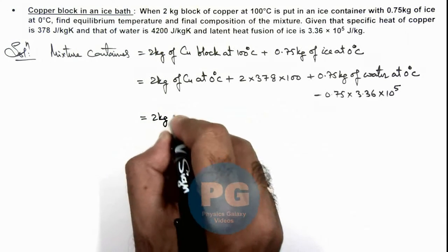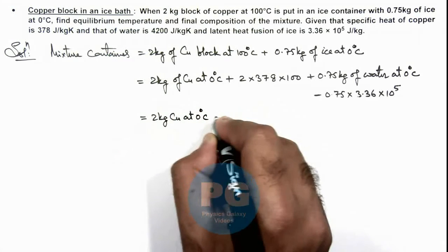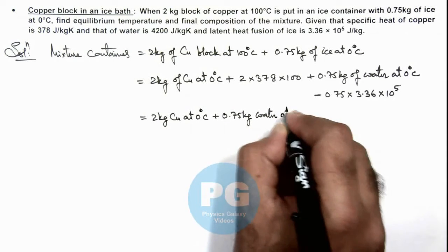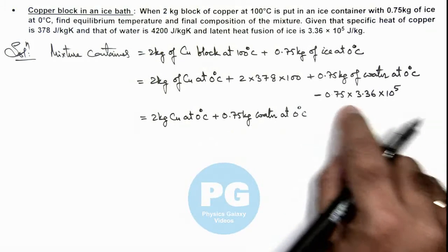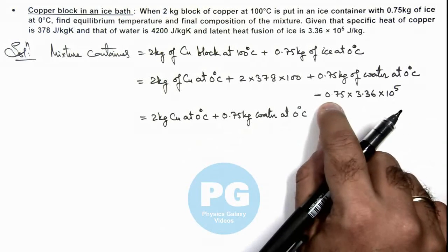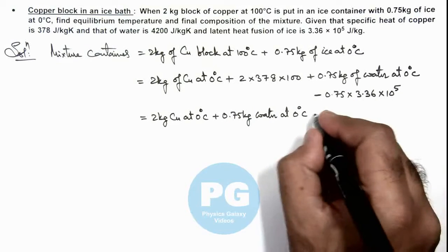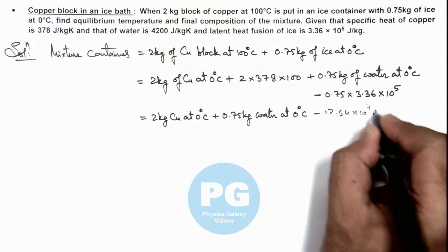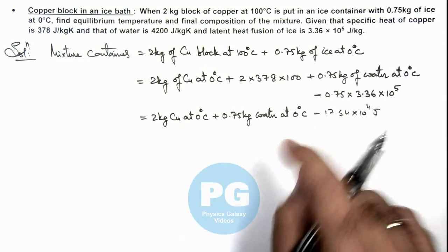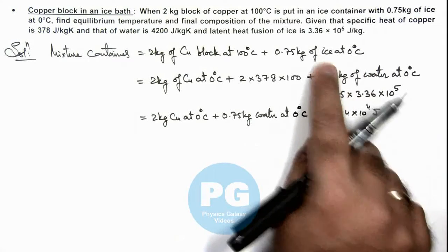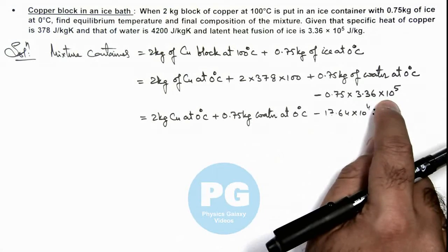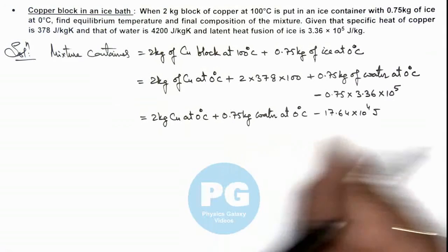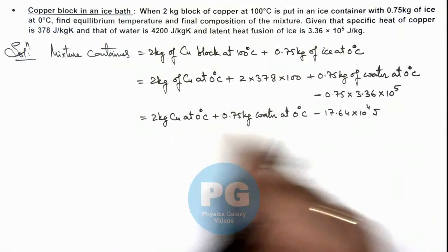So on numerically when we simplify this it gives 2 kg copper at 0°C plus 0.75 kg water at 0°C. And here we can see when you numerically simplify these two terms the final result will be minus 17.64 × 10^4 joules because this term is higher. That means to melt the complete ice in water, the amount of heat required is more than the amount of heat released by copper. So anyway, our mixture we consider it contains this much amount of substance as well as some heat.